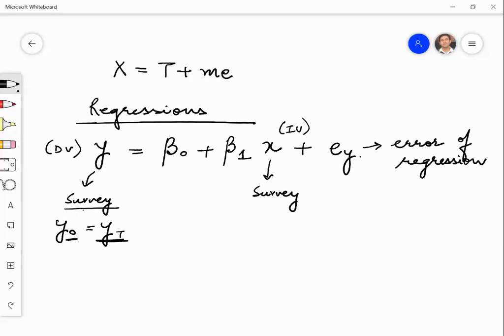Similarly, we used to assume here, the assumption was that y observed is equal to y true. Similarly, x observed is equal to x true.